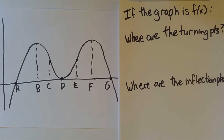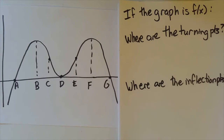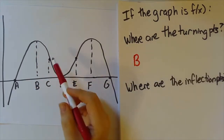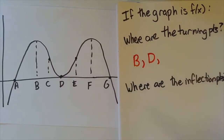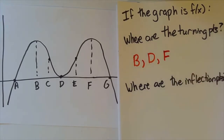Think in your head real quick, where are the turning points going to be? As it happens, there will be three of them. Where the function changes from increasing to decreasing, that's at b. Where the function changes from decreasing to increasing, that's at d. And where the function changes from increasing back to decreasing, that's at f. So b, d, and f are the turning points.